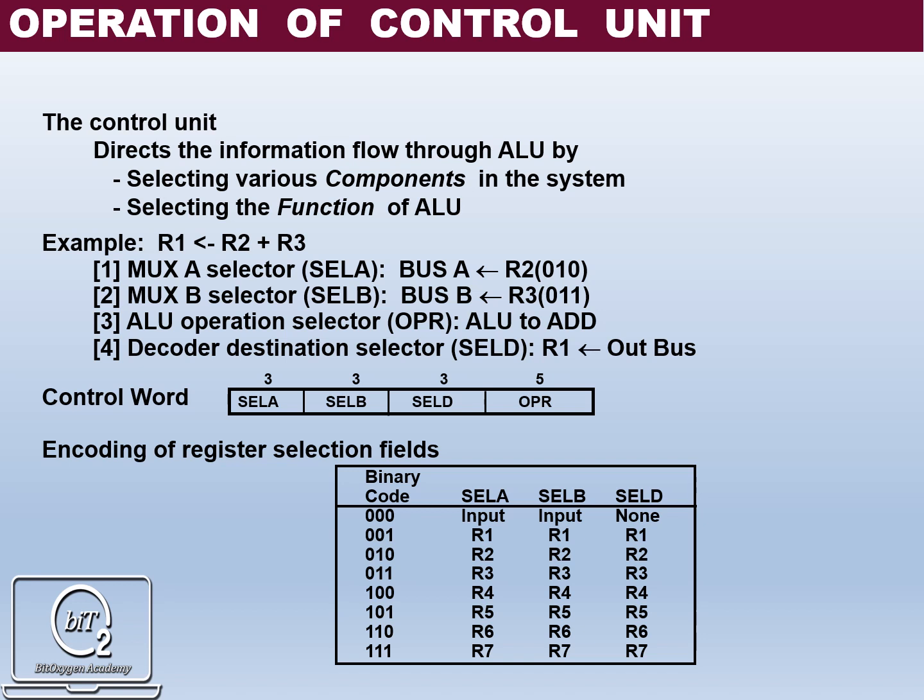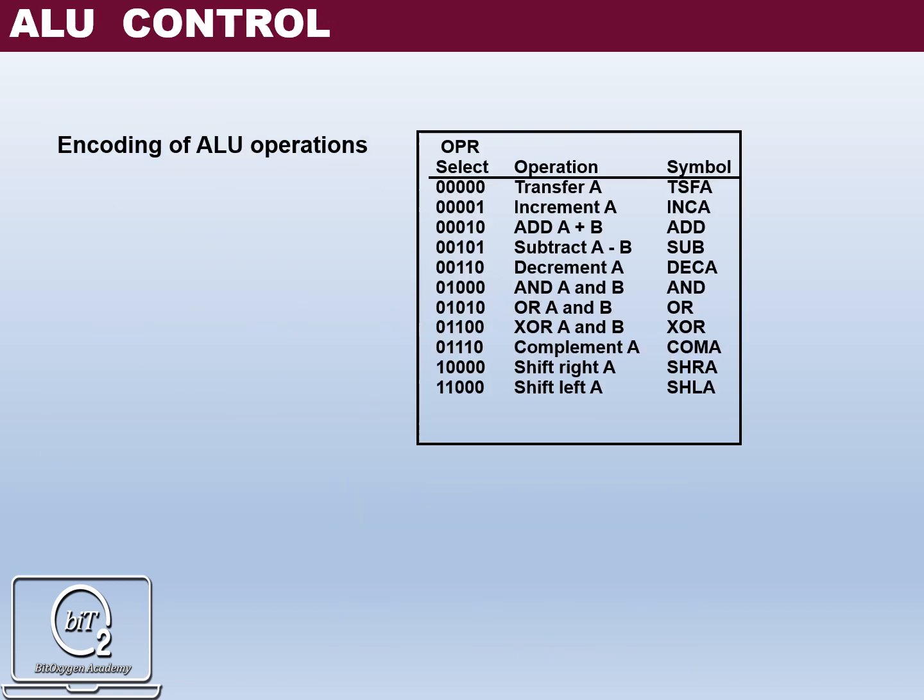Then ALU operation selector, OPR, is set to add operation, and destination selector D selects output register R1. From this table, the processor will select the encoding value of operation selector OPR. For example, for add operation, the processor will select the value of OPR as 0100.